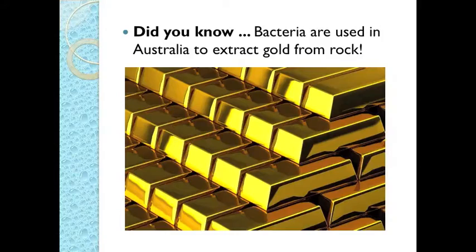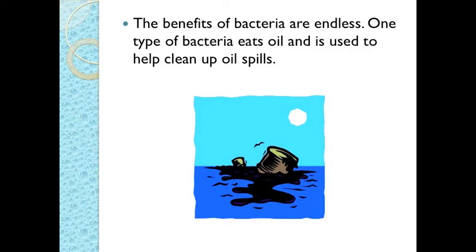E. coli is not good on your steak or in your burger, but good in your stomach. E. coli lives in the intestines of animals and people, helps them digest food, and produces vitamins. Other bacteria also help to decompose dead animals and plants — they're like the janitors of the planet. There's also a bacteria in Australia used to extract gold from rock, and bacteria are incorporated in cleaning up oil spills and processing raw sewage.